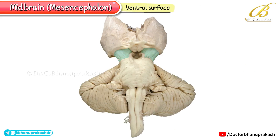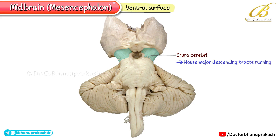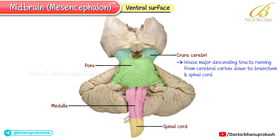Now we have the ventral surface of the midbrain, featuring two prominent columns of white matter known as the crura cerebrae. These crura house major descending tracts running from the cerebral cortex down to the brainstem and spinal cord. It's an excellent external landmark that distinguishes the midbrain from the pons and medulla below.